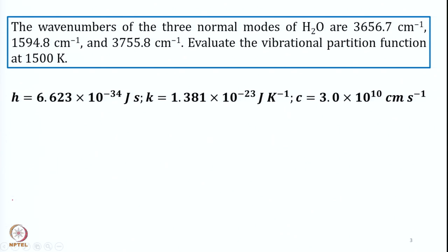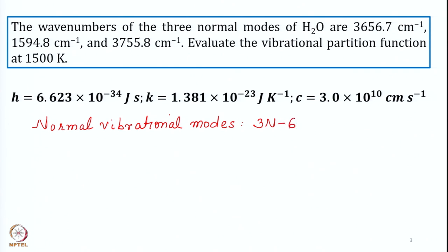Water is a non-linear molecule, so the number of normal vibrational modes is calculated by 3N − 6. There are three atoms in water, so 9 − 6 = 3. These three normal modes vibrate at the given frequencies, and we need to find the vibrational partition function.